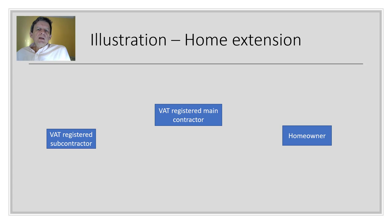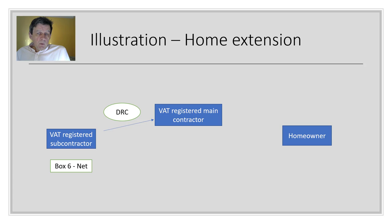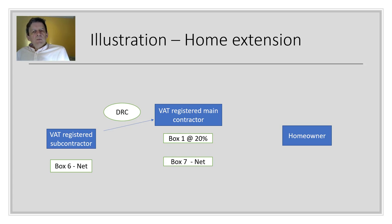Let's look at how this works using a home extension example. A homeowner has an extension done through a VAT-registered main contractor, who subcontracts some of the work. The domestic reverse charge applies between the VAT-registered subcontractor and the VAT-registered main contractor. This means the subcontractor is not allowed to charge VAT on that invoice — it's mandatory. The invoice goes out with just the net showing, which goes in box six of the VAT return. The VAT-registered main contractor then handles the reverse charge: putting the correct rate of VAT in box one and the net in box seven.